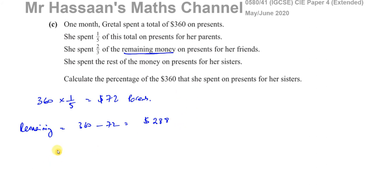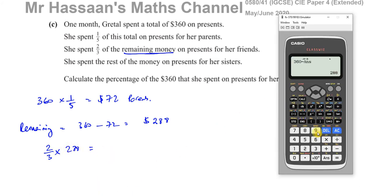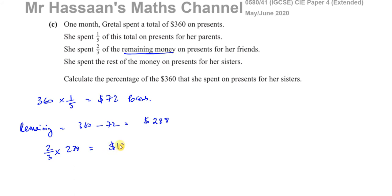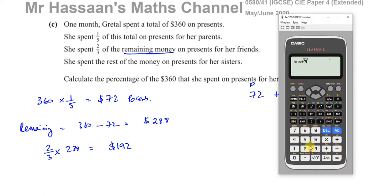She spent two-thirds of the remaining $288 on friends. Two-thirds times $288 = $192 on her friends. So she spent $72 plus $192 total so far, which is $264.